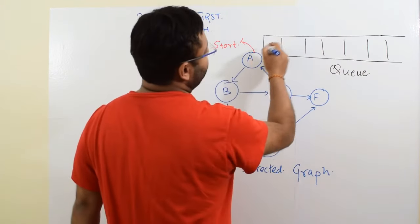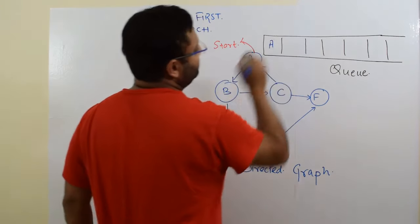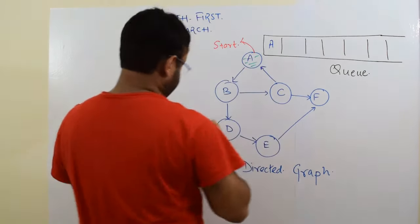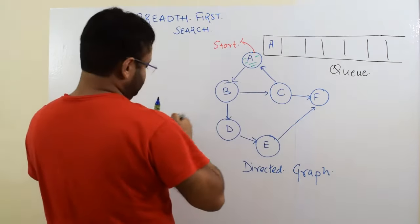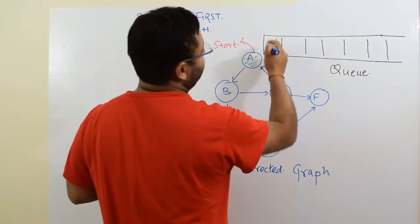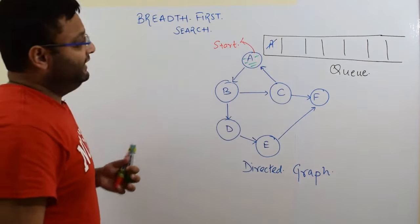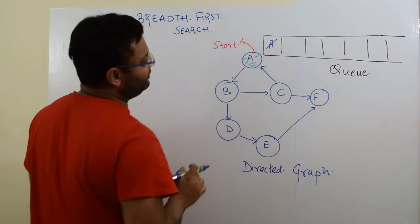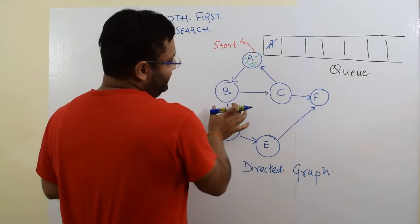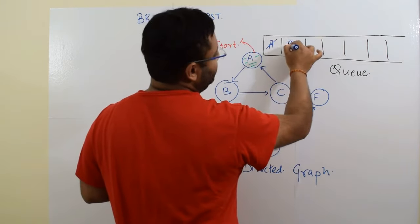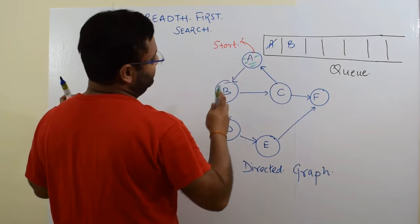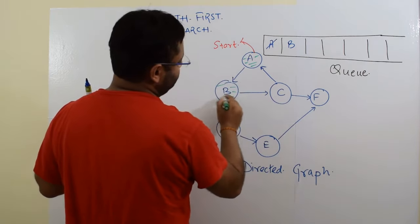So now let us see what we will do. Definitely we will first of all push A into the array and mark A as visited. Now we will take A out because it is the only element and see what are the neighbors of A. In this case B is the only element. So you will push only B and simultaneously mark it as visited.